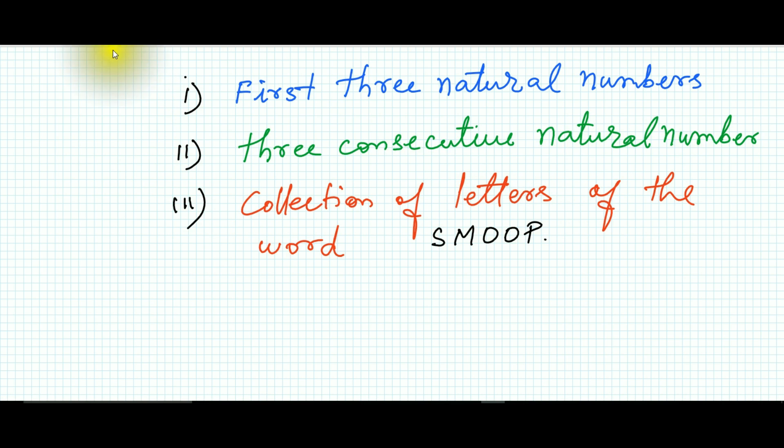I have written the example of three sets here. Now I will observe these three sets, and we will notice why we have used the words 'well-defined' and 'distinct' in our definition. The first set I wrote was the first three natural numbers, so it will be {1, 2, 3}.